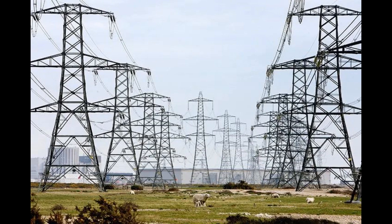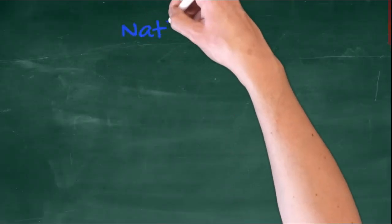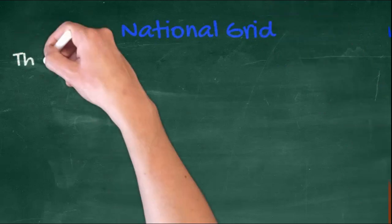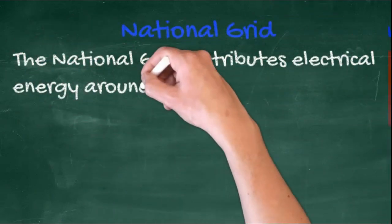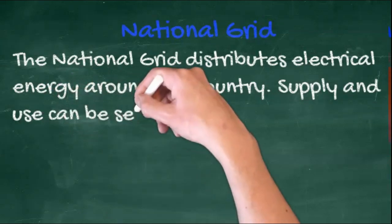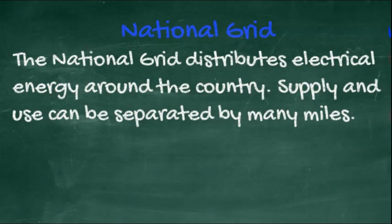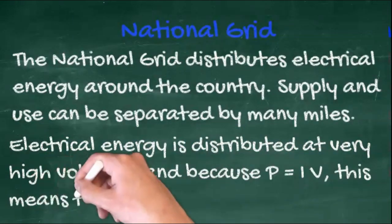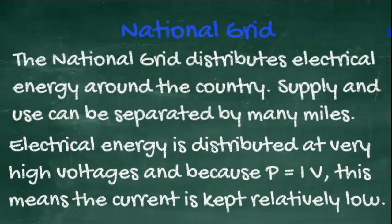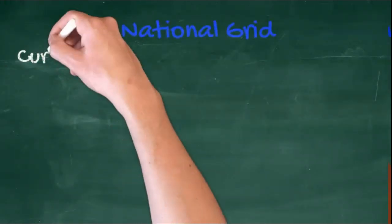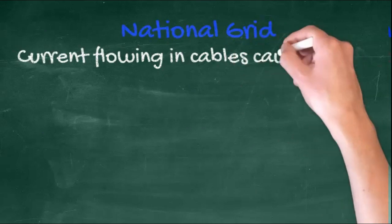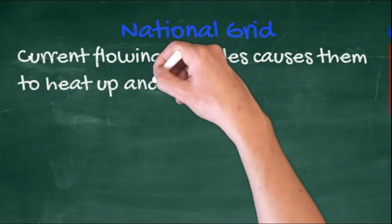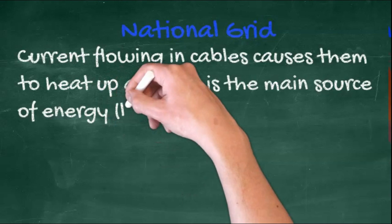Transformers are an essential part of the national grid, where pylons carry electricity all around the country. The national grid distributes electrical energy all around the country. Supply and use can be separated by many miles. Electrical energy is distributed at very high voltages and, because p equals iv, this means the current is kept relatively low. Current flowing in cables causes them to heat up, and this is the main source of line loss.